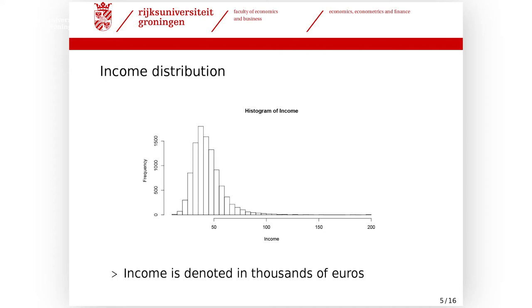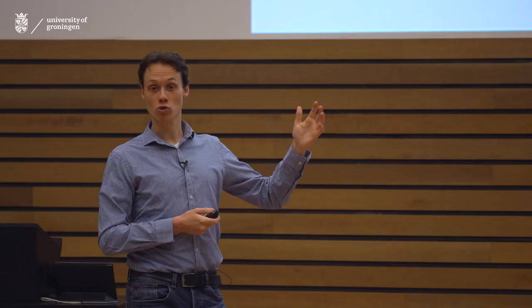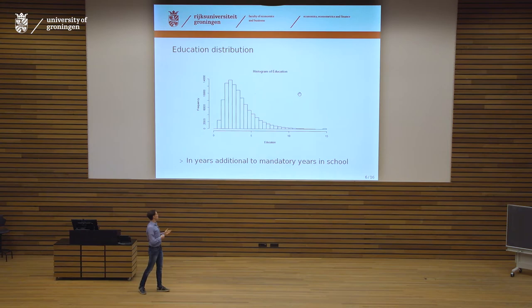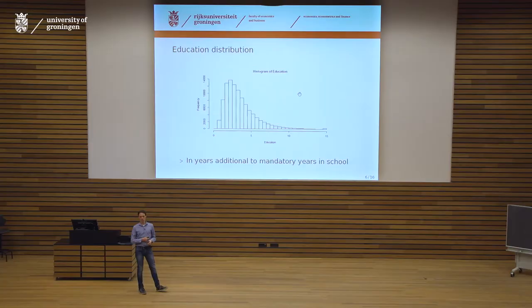To answer this, we first look at the data. We have a histogram of income in thousands of euros. For example, just below 50,000 euros there are about 1,500 observations. Most people fall between 20,000 and 60,000 euros annually. This represents realistic income data. We also look at education, measured as years additional to mandatory schooling above age 16. Very few people stopped at 16; many have more applied education, and fewer have higher levels.